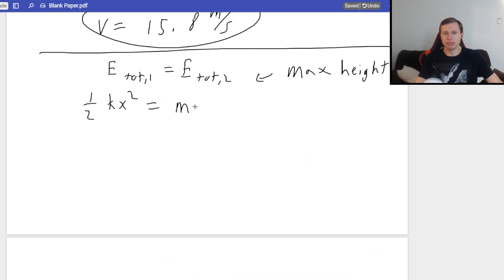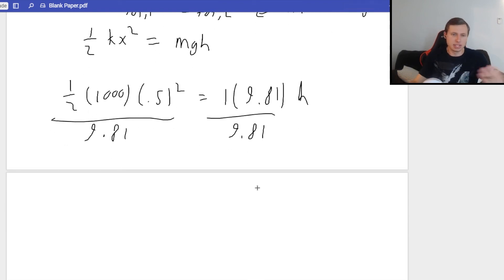So one half KX squared equals MGH this time. Spring energy equals gravitational potential energy. And we just need to solve for max height is H now. So one half times K is one thousand times point five squared equals mass, which was one. G is nine point eight one times height. I just need to divide both sides by nine point eight one and plug that in a calculator. And we'll get our height. So one thousand times point five squared, which again is two fifty. Divide that by two, and then divide that by nine point eight one. We're going to get a final height of twelve point seven. And the units for that are meters. And there we go.